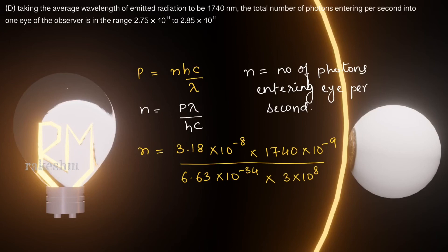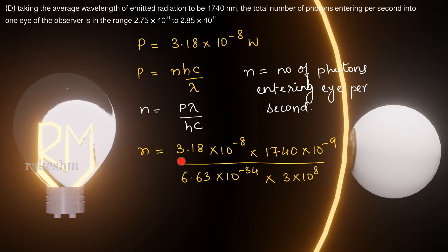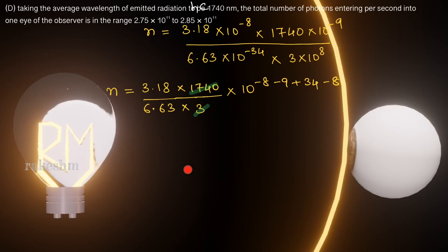Total power = energy per photon × number of photons per second, so N = Pλ / hc. With P = 3.18 × 10⁻⁸ W, λ = 1740 × 10⁻⁹ m, h = 6.63 × 10⁻³⁴ J·s, and c = 3 × 10⁸ m/s. Some students left this question thinking the calculation was lengthy, but since a range is given, we can make approximations. Writing 3.18/6.63 as 318/663 and cancelling factors.